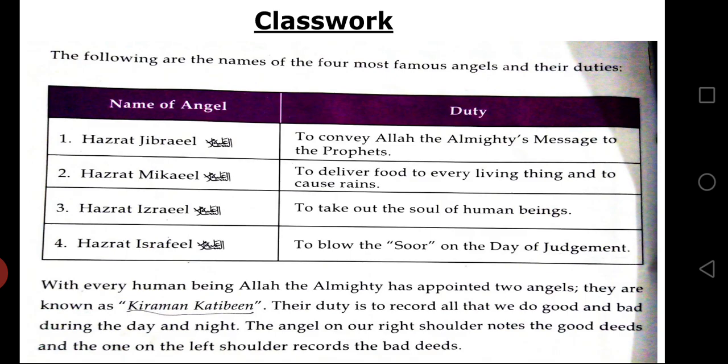The second angel is Hazrat Mikail (A.S.). The duty of Hazrat Mikail was to deliver food to every living thing — you can underline 'every living thing' — meaning human beings, animals, all the insects, and all the animals living on land and in the ocean, and to cause rains. His duty was to make rain happen.